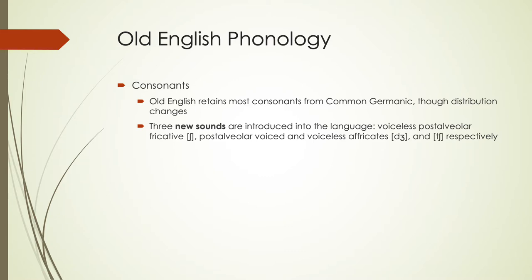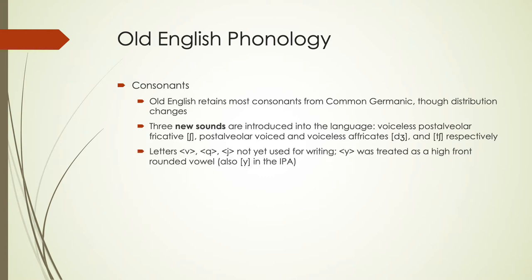There were some letters we use now that were not used during this time. Letters like V, Q, and J were not yet found in the writing system. The letter Y that you see in the writing system in Old English was a high front rounded vowel, which is how it's also represented in the IPA. So that 'ü' sound is going to be represented in the spelling with a Y as well as in the IPA with a Y.